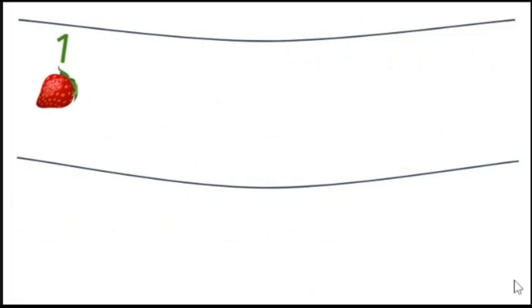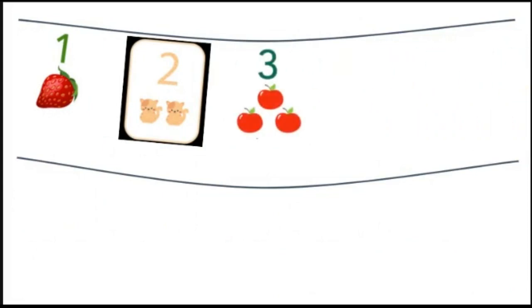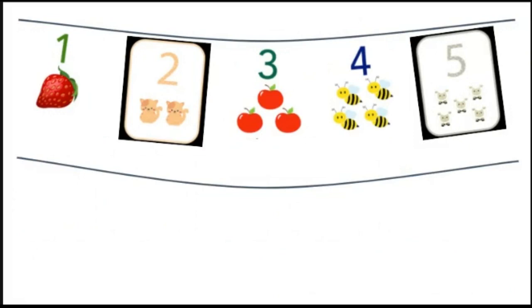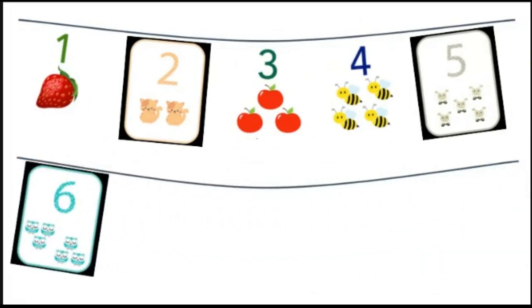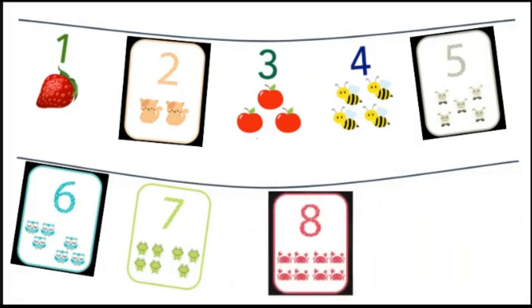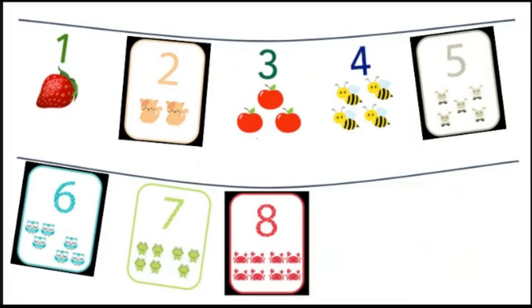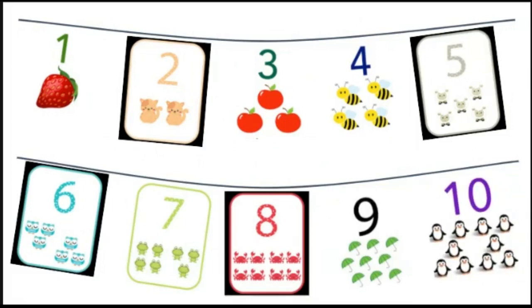Let's look at the numbers again. One, one strawberry. Two, two cats. Three, three apples. Four, four bees. Five, five sheep. Six, six owls. Seven, seven frogs. Eight, eight crabs. Nine, nine umbrellas. Ten, ten penguins. Good job.